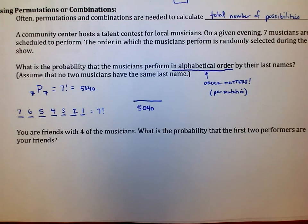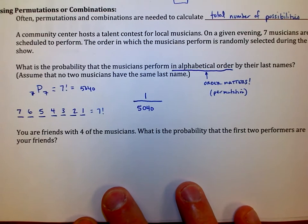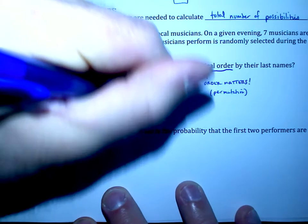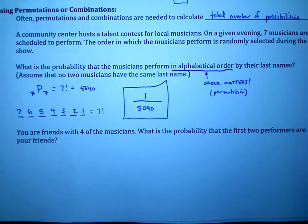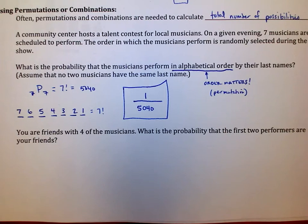Now, the second part says, how many of these actually have them in alphabetical order? And this might be a little bit more complicated, but really, if you think about it, if I've got a guy named Smith and a guy named Johnson and a guy named Jones, if I have seven musicians, there's only one way that I could possibly line them up that has them in alphabetical order. And so in this particular example, the top of the fraction is one.